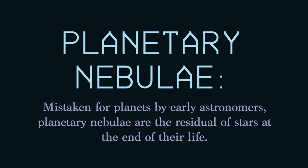Planetary nebulae — this is a misnomer. Early astronomers mistook these structures for planets, when they are actually the residual of stars that have reached the end of their life. Stars about the size of our Sun, when they exhaust their fuel, become red giants, then white dwarfs, then shed their outer shell and become planetary nebulae. Stars many times larger than our Sun, when they reach the end of their life, go supernova, shed their outer shell, and collapse into a neutron star. The residual atmosphere becomes the planetary nebula.